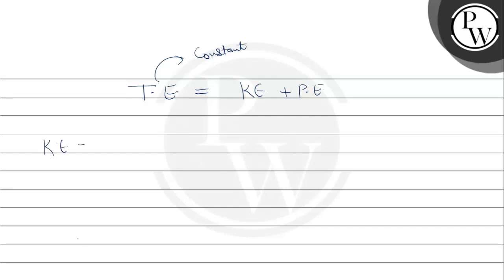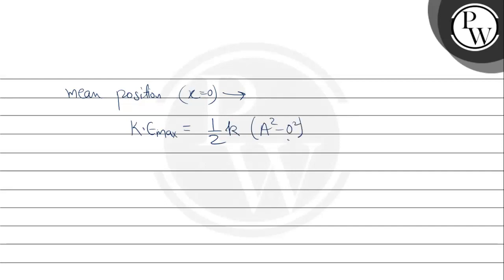Kinetic energy formula is half k times (a² - x²). As we know at mean position when x value is 0, kinetic energy is maximum. Half k(a² - 0²), so KE max becomes half ka².